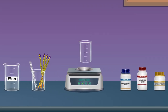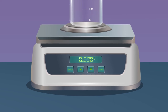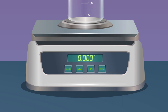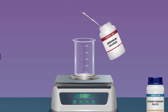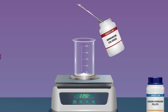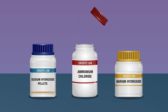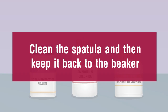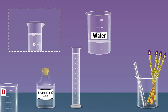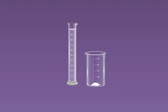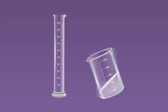Take a 250 ml empty beaker and place it on a weighing balance. Press the tare button on the weighing balance until it shows 0.000 g. Take a spatula and add ammonium chloride into the beaker until the weighing balance shows a reading of 5.35 g. Now add 100 ml of water to the beaker containing ammonium chloride using a measuring cylinder and shake it until the ammonium chloride dissolves.